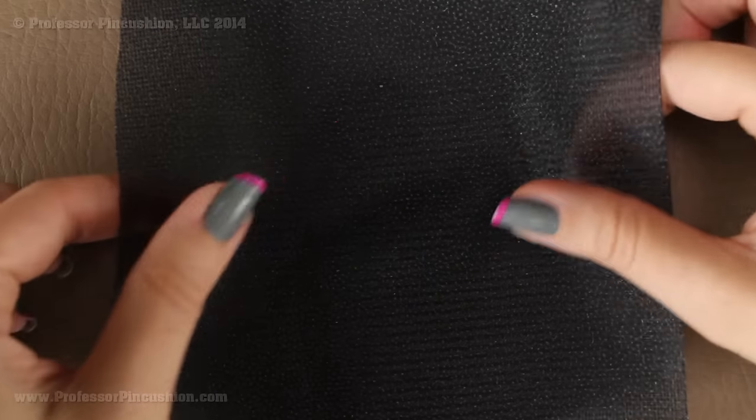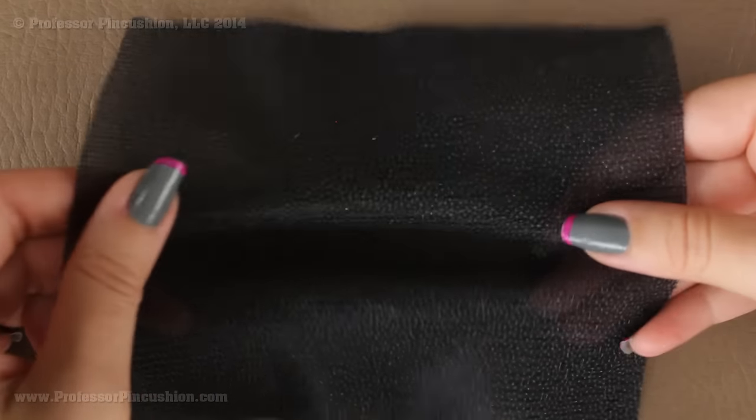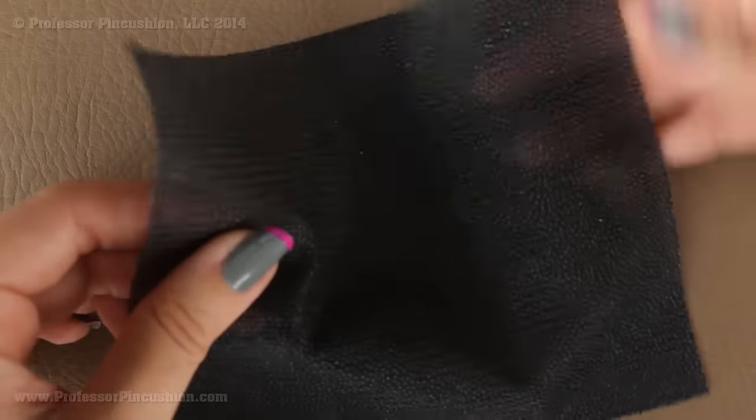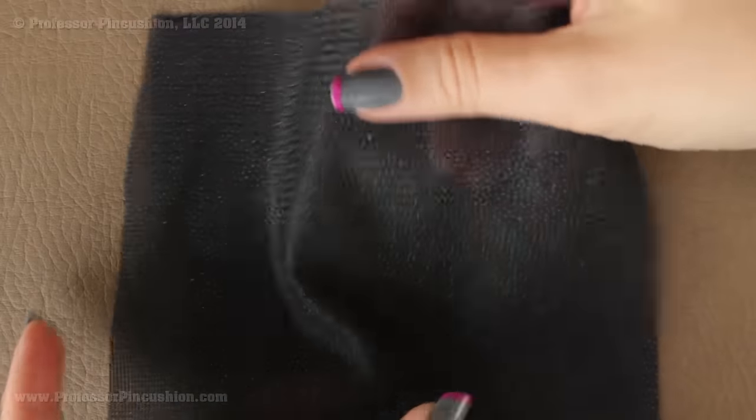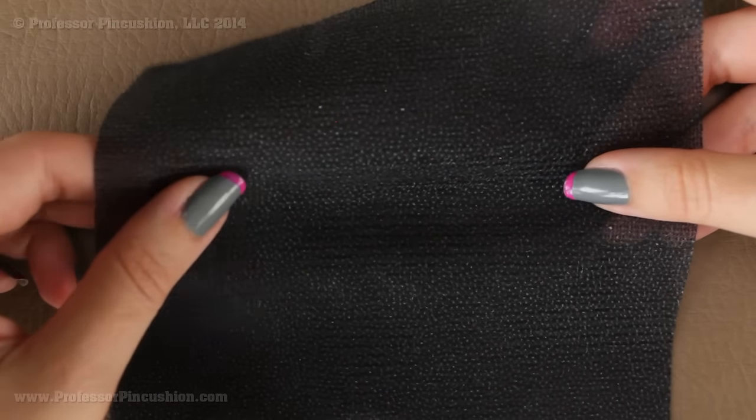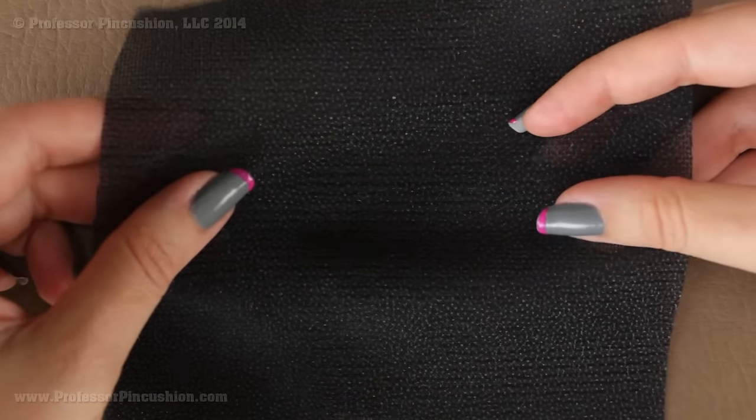My last type is going to be knit interfacing and like the name implies, it's perfect for knit fabric because it has some stretch to it. So we like it, it has the flexibility. The only thing is it stretches this way, doesn't really stretch the other way. So you want to be careful when you cut out your pattern pieces that it's going to be the same as your fabric so you can take advantage of that stretch.